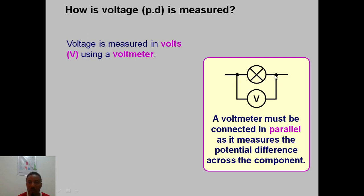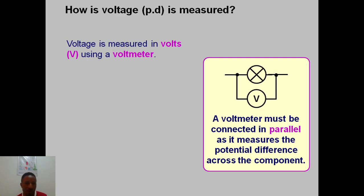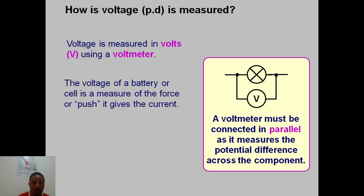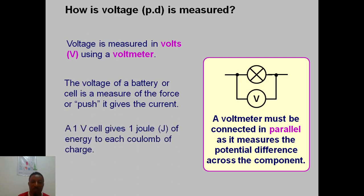We need to know the energy difference between one end and the other end. Potential difference is the difference in energy between one point and another. We need to know how much charge has moved from the high energy point and how much charge is at the low energy point — the difference between when it has energy and when it doesn't. That's why we connect it in parallel between the two ends, to measure the potential difference. A voltmeter must be connected in parallel as it measures the potential difference across components.